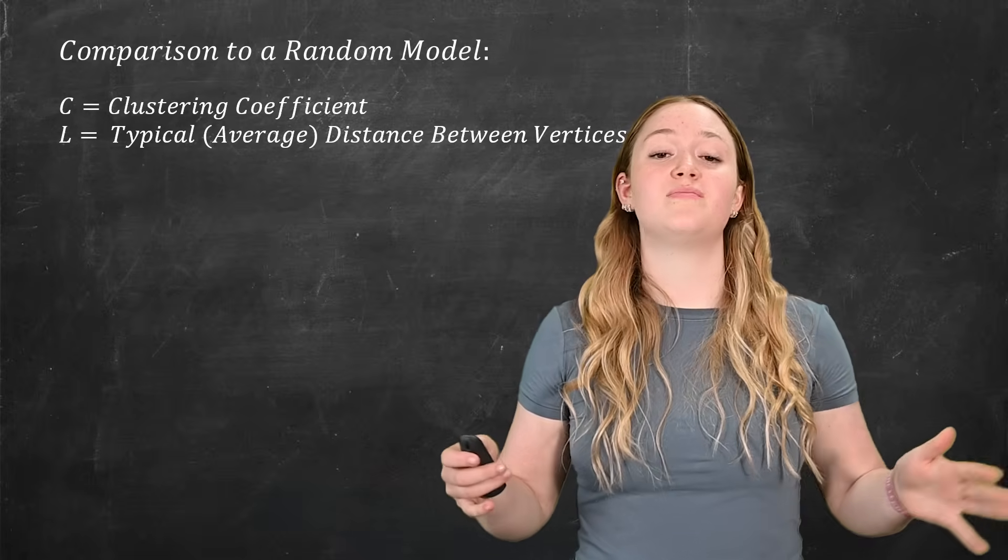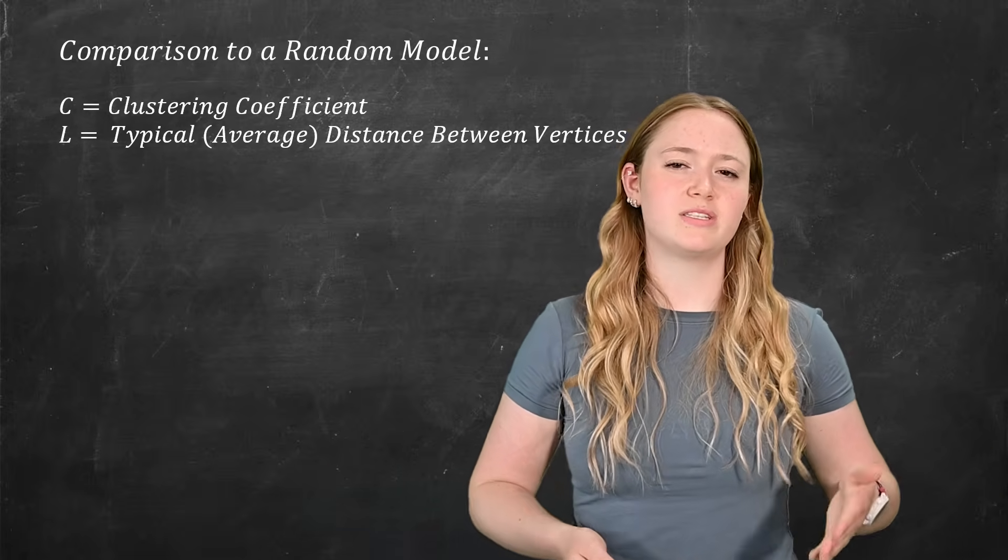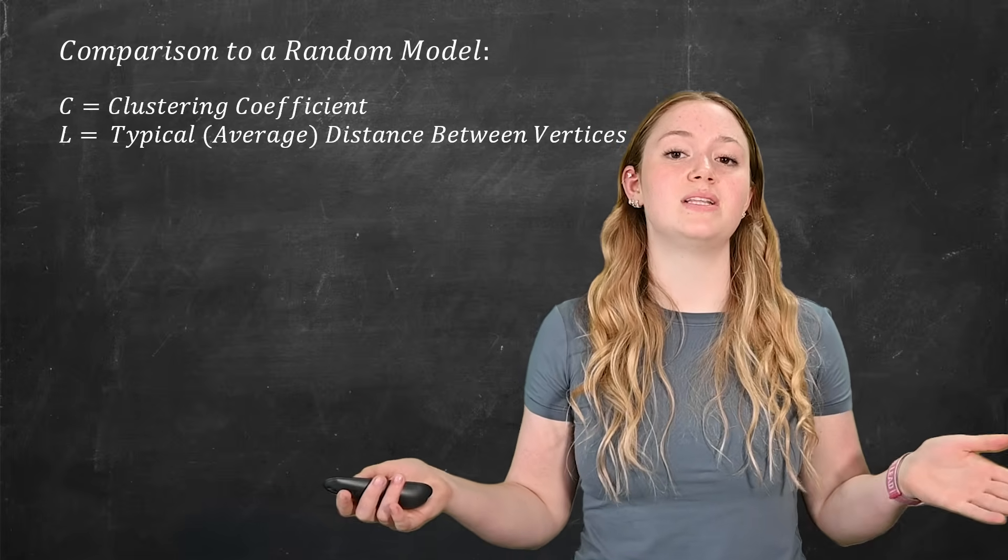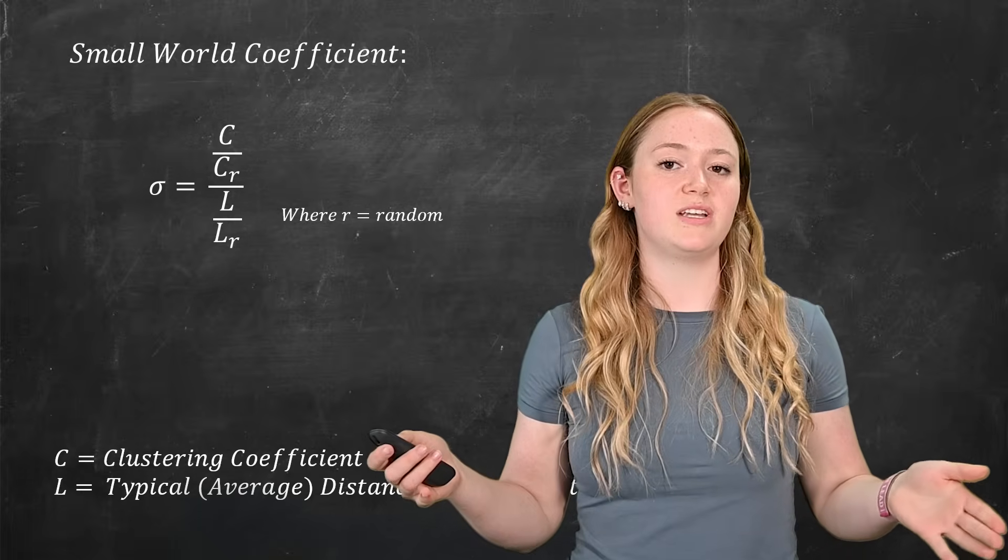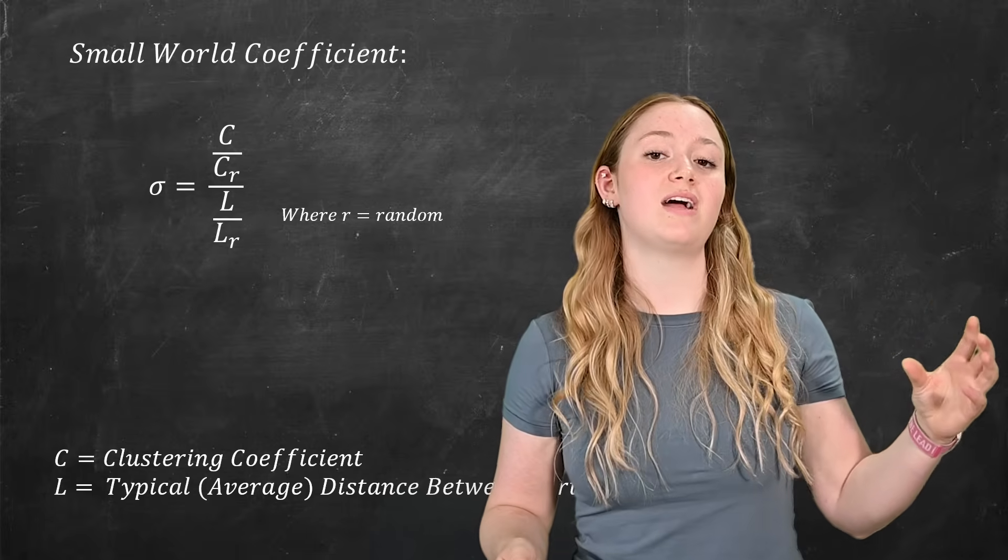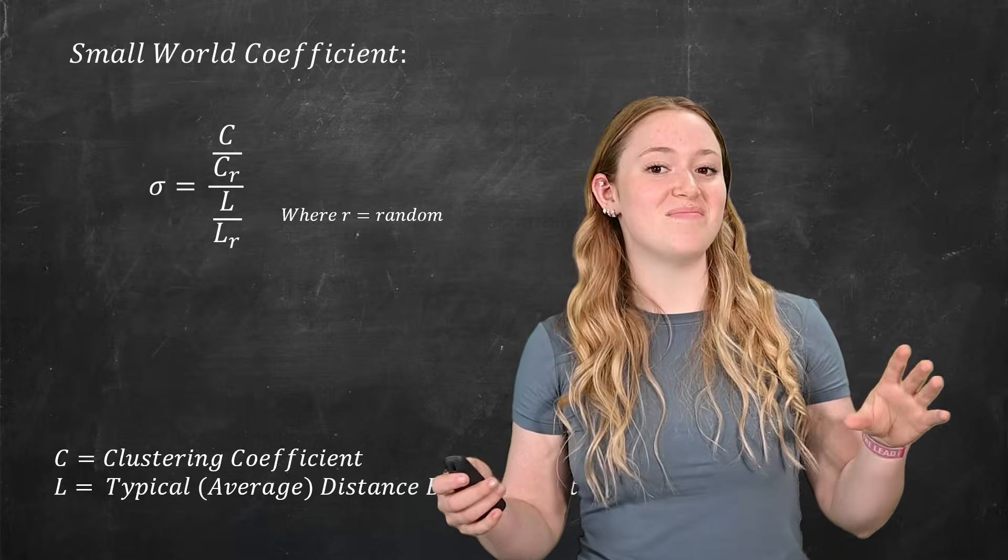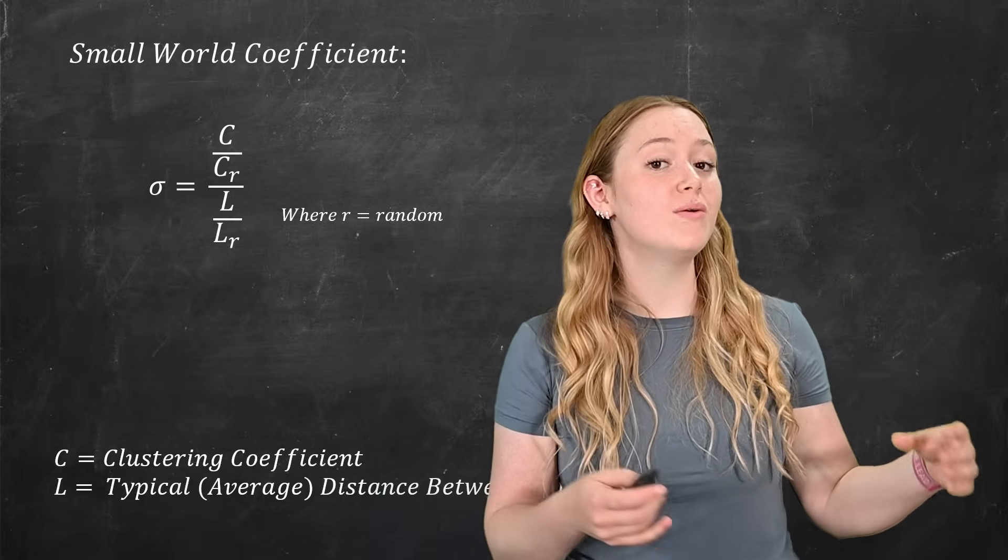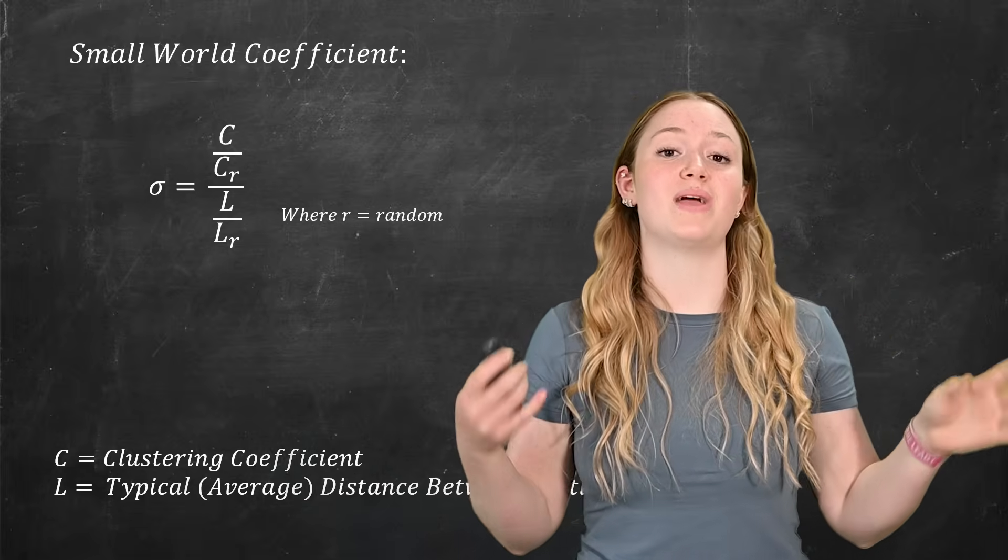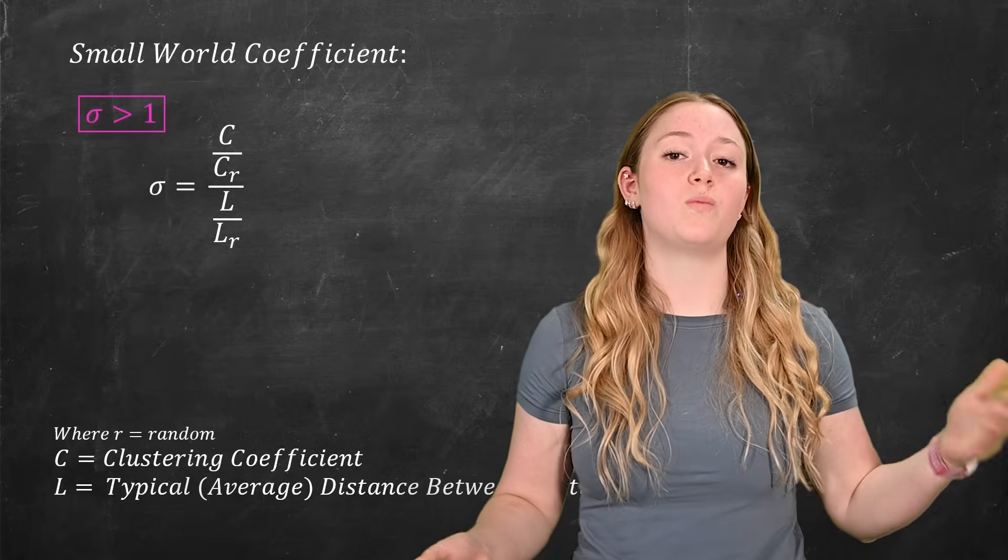So there's a couple of different ways of measuring the likelihood that a graph is a small world graph. Today we're just going to be looking at the small world coefficient, but we'll put a link in the description if you're curious about the other ones. So for the small world coefficient, we divide the clustering coefficient of the suspected small world graph by the clustering coefficient of the random graph, divided by the average distance between the vertices of the small world graph, divided by the average distance between the vertices of the random graph. To be a small world graph, sigma must be greater than one.